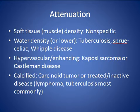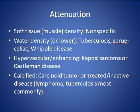Regarding attenuation: soft tissue attenuation similar to muscle is nonspecific. Water density or low-attenuated lymph nodes are seen in TB, sprue, celiac disease, and Whipple's disease. Hypervascular or enhancing lymph nodes are seen most commonly in carcinoid tumor, or treated/inactive lymphoma and TB.